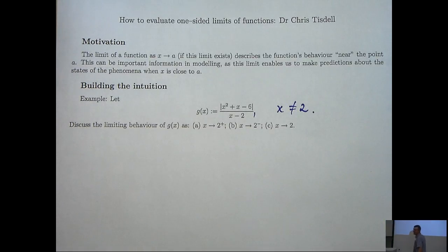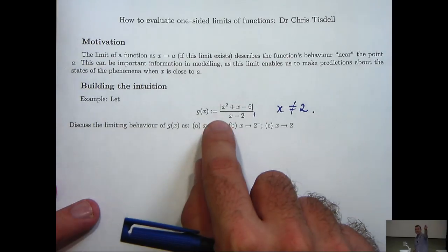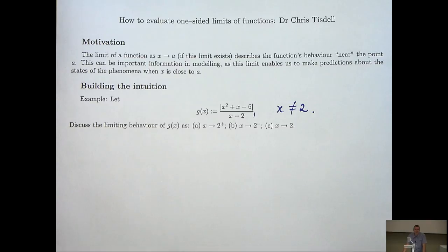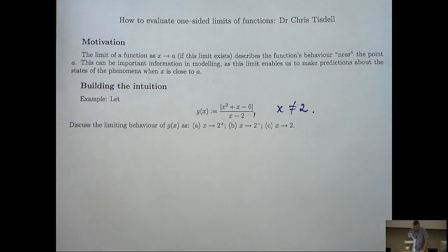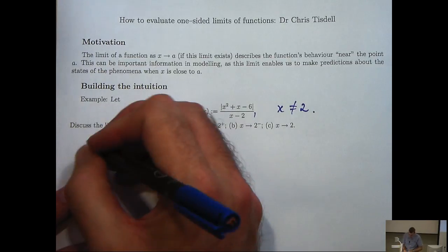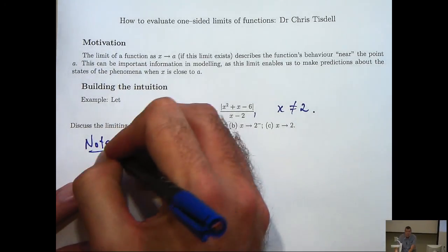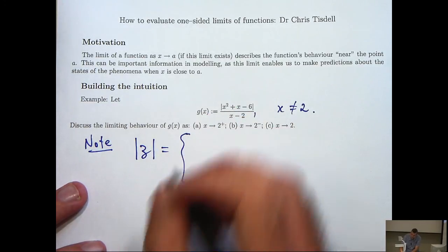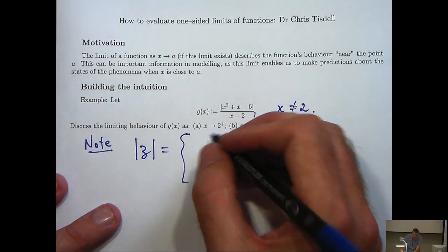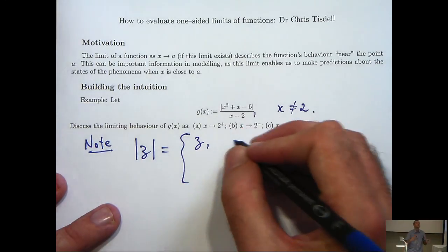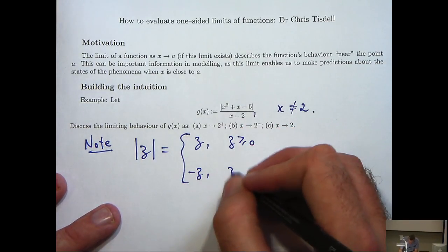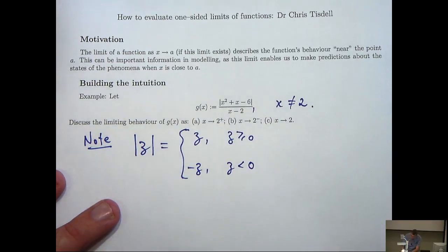Okay, well firstly notice that we've got an absolute value sign in our definition of g. So let's remind ourselves what the absolute value really means, and it's defined in the following way. If z is a number, then the absolute value of z is defined as z if z is greater than or equal to 0, and negative z if z is less than 0.